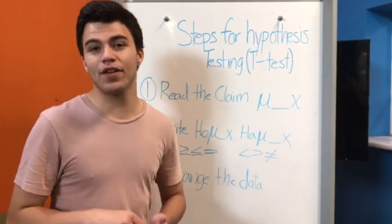The second step, you have to write the null hypothesis and the alternative hypothesis. This is with any of the possible outcomes that there is.